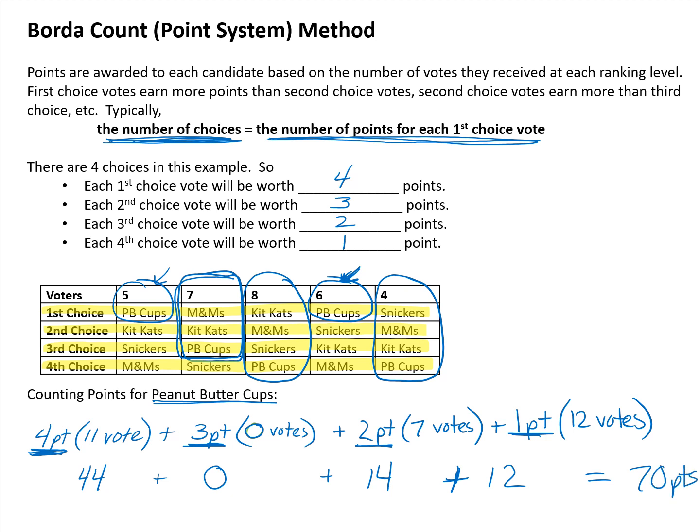So Peanut Butter Cups have 70 points. In the Borda Count system, we repeat this same process for each candidate to get a point score. Whoever has the highest point score — meaning they were ranked higher overall — wins the election.